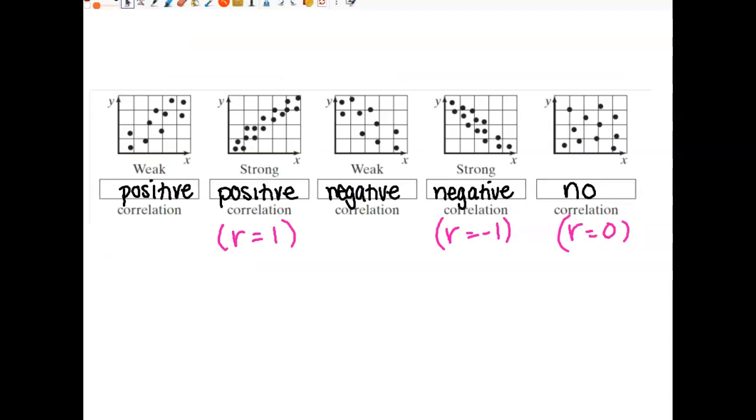Data is described in one of five ways. Data is either weak or strong, positive or negative, or no correlation whatsoever. Our calculator will tell us whether data is strong and positive, strong and negative, or has no correlation depending on where it lies from negative one to one. So data with no correlation will have a zero R value on the calculator. So here, extremely strongly correlated data will either be very close to one or negative one, depending on if the slope is positive or negative.